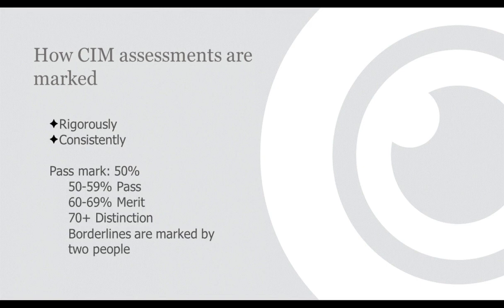We always get asked what the pass mark is. The pass mark for every single module is 50 percent. Between 50 and 59 percent you'll be given a pass grade. Between 60 and 69 percent it's a merit. Over 70 percent you get a distinction. Anything under 50 percent — 49 and under — is a fail. It's worth pointing out that you get the actual percentage marks, so you will know where you came in those grade borders.